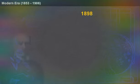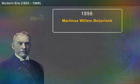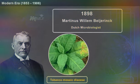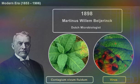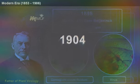Later, in 1898, Martinus Willem Beijerinck, a Dutch microbiologist, proved that tobacco mosaic disease was caused by an organism — Contagium vivum fluidum — which was later regarded as a virus. He was called the father of plant virology.